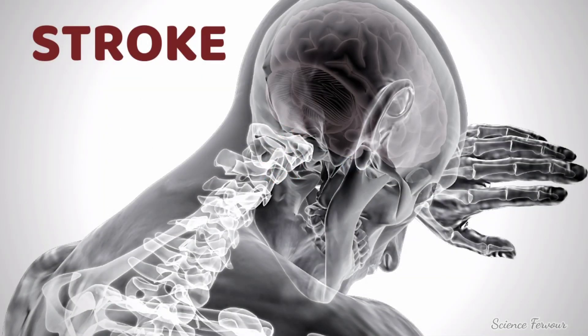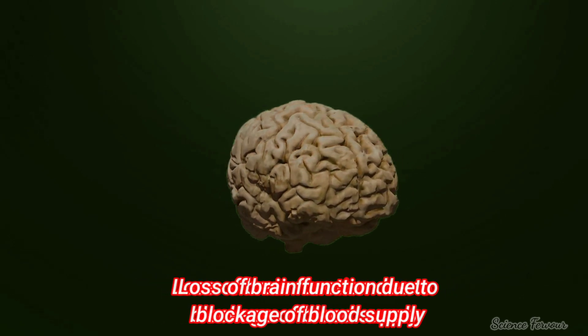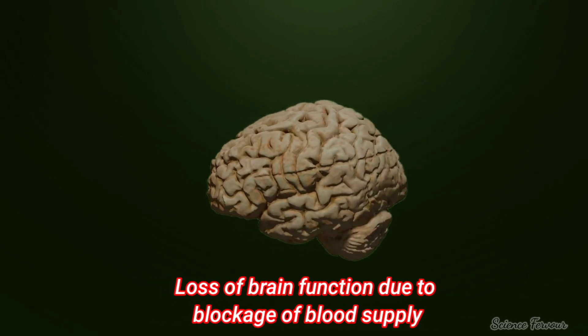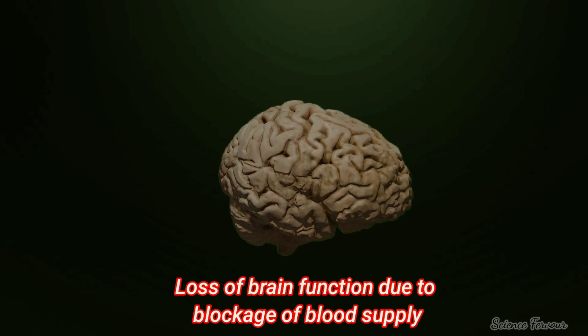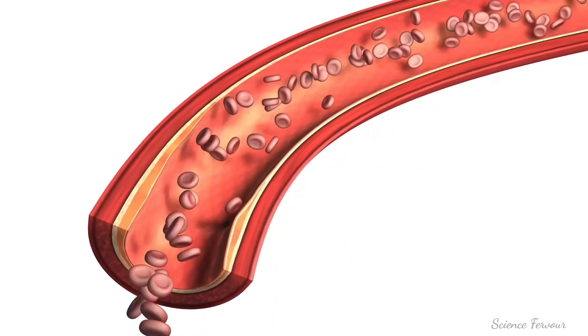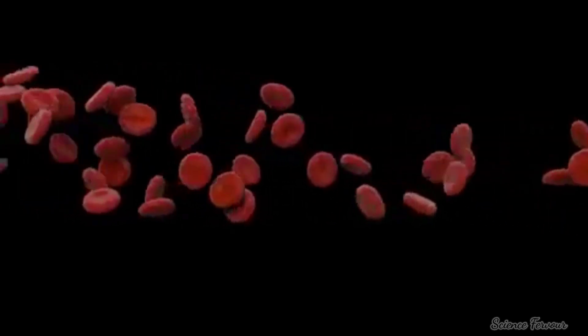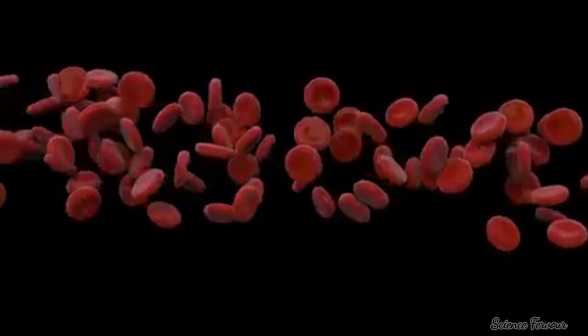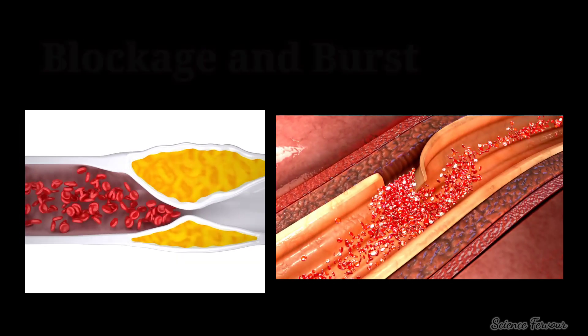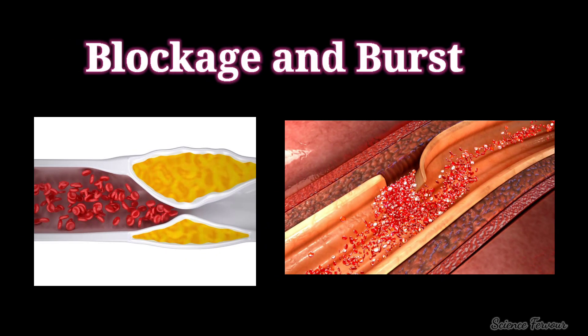This video is about the topic stroke. Stroke is the loss of brain function due to a blockage of the blood supply to the brain. Normally blood is carried to the brain from the heart through arteries. The blood provides oxygen and nutrients needed for the brain. A stroke occurs when these arteries are either blocked or burst, the blood supply is cut, and the cells start to die.